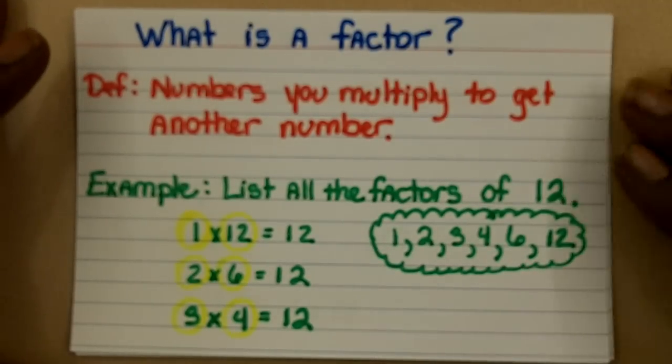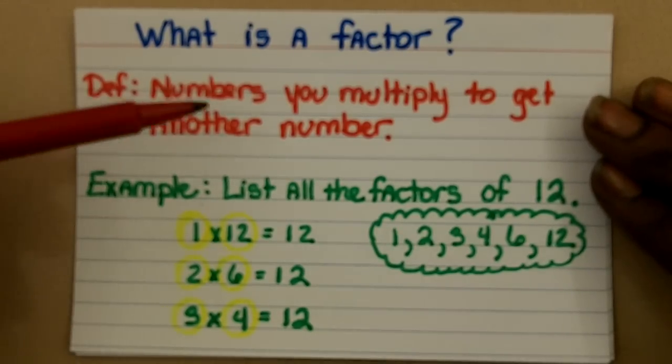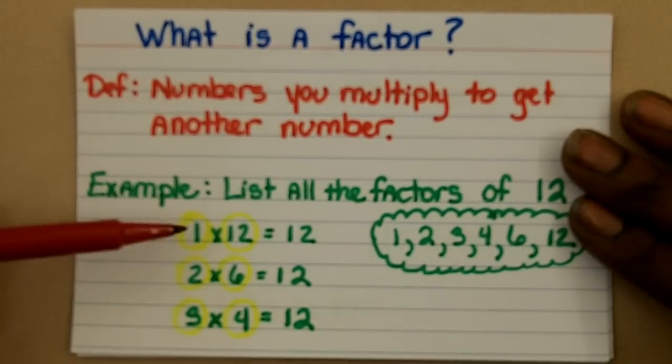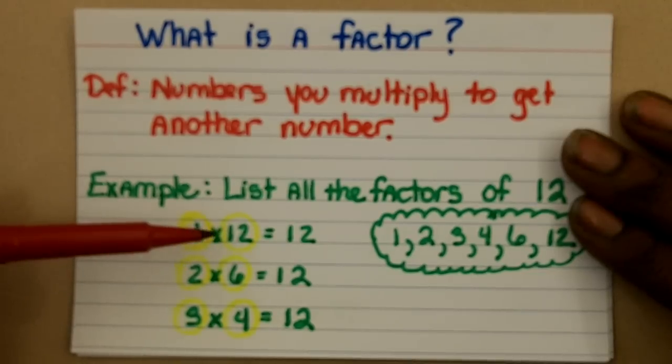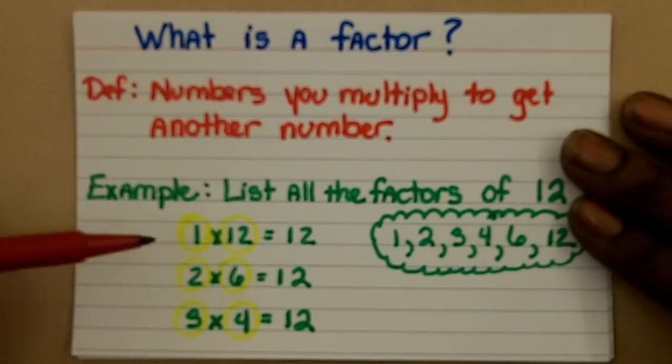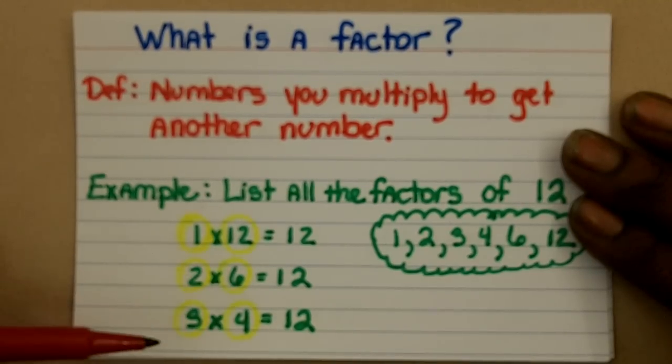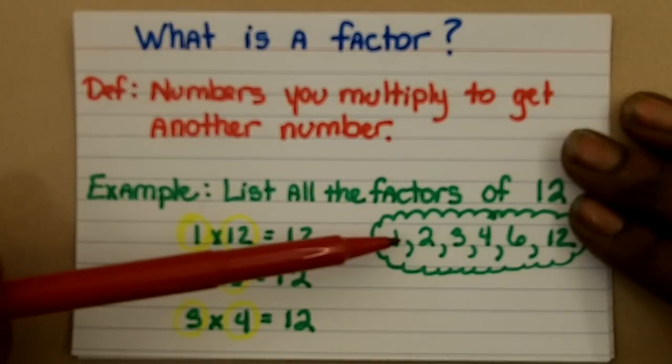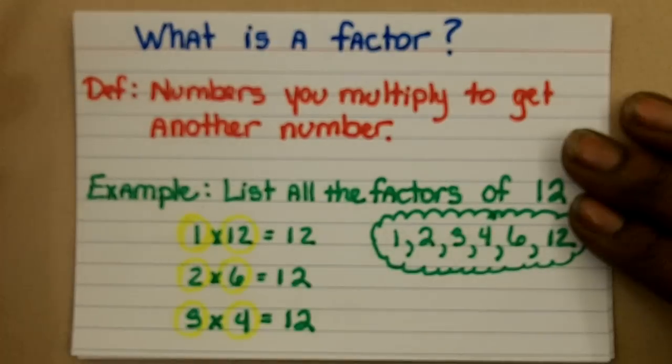What is a factor? Well, a factor is simply numbers that you multiply to get another number. For example, if you were asked to list the factors of 12, most people find it helpful to think of all the factors by thinking of what we call factor pairs, meaning what two numbers could we multiply together to get 12? Well, you could do 1 times 12, 2 times 6, or 3 times 4. By listing the factor pairs, we have found the factors of 12 to be 1, 2, 3, 4, 6, and 12.